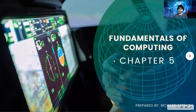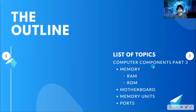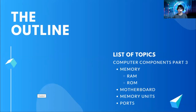Hey everyone and welcome to Chapter 5 of Fundamentals of Computing. We are now on Chapter 5. These are our list of topics. We are going to continue discussing the different computer components. We will be discussing about memory, random access memory, read-only memory, and we will also discuss the motherboard, the memory units and ports.